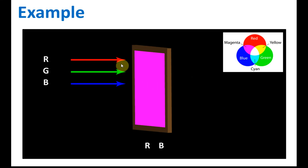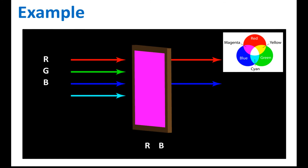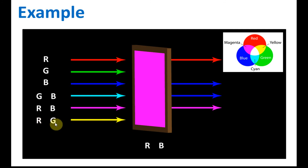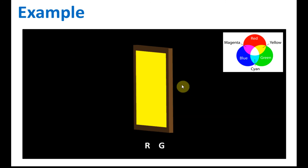For the magenta filter: the three primary colors — magenta is red and blue — so red and blue are allowed to pass through. If cyan comes in — cyan is green and blue — only blue is allowed to pass through, green will be blocked, so blue color light comes out. Magenta in, magenta out because they are the same color. Yellow is red and green — only the red light is allowed to pass through, green will be blocked, so the light that comes out is red.